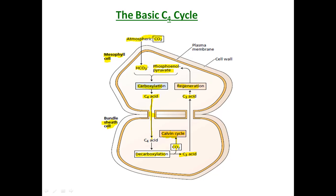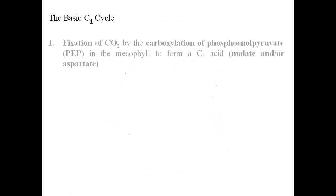There are four basic steps in the C4 cycle: Step one is carboxylation, where CO2 is fixed; step two is transport of the C4 acid to the bundle sheath cells, driven by diffusion gradient; step three is decarboxylation, where carbon dioxide is released and C3 acid is synthesized; and step four is regeneration of phosphoenol pyruvate in the mesophyll cells after the C3 acid is transported back.